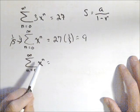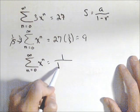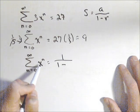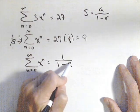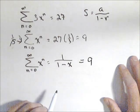Now the first term is when I plug in zero, so I get one. So this is equal to one over one minus the common ratio, which is just x. So I'm gonna set that equal to nine, and this is the equation I have to solve.